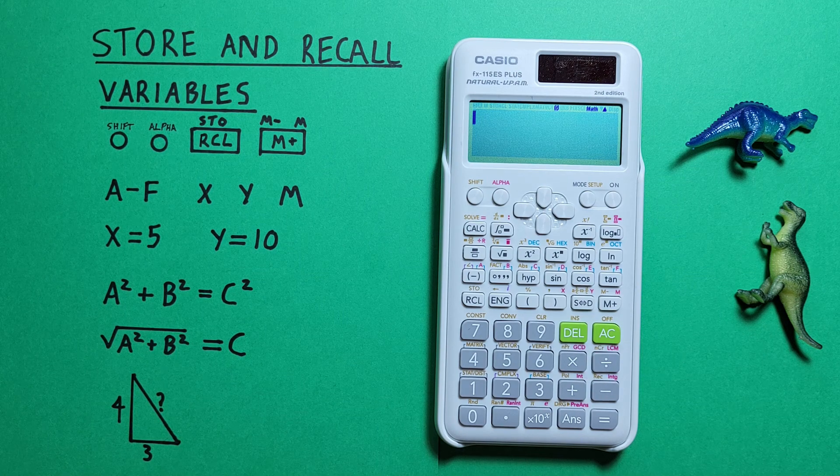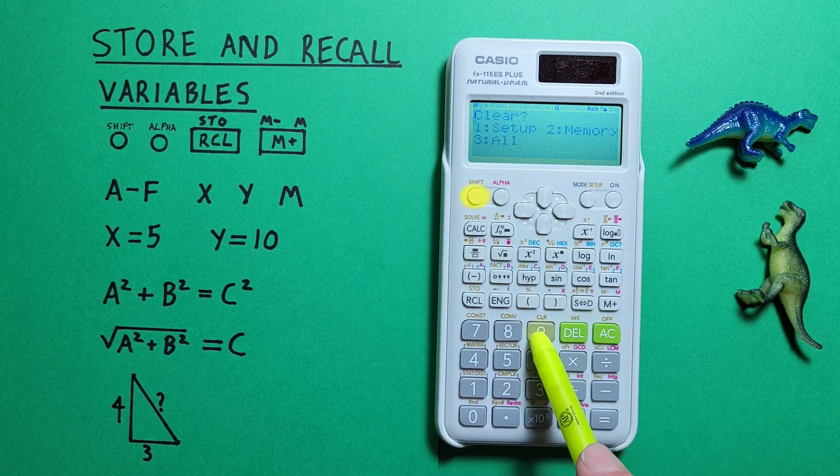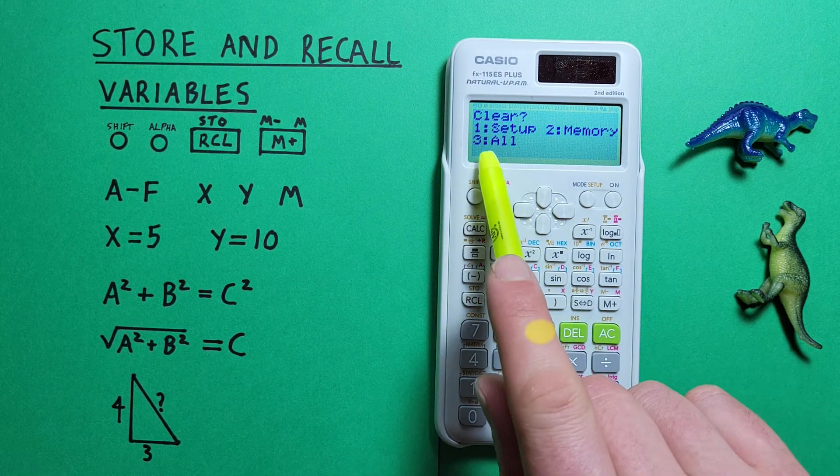If we want to clear all our memory slots at the same time, what we can do is press shift 9. That'll bring us to this menu here.